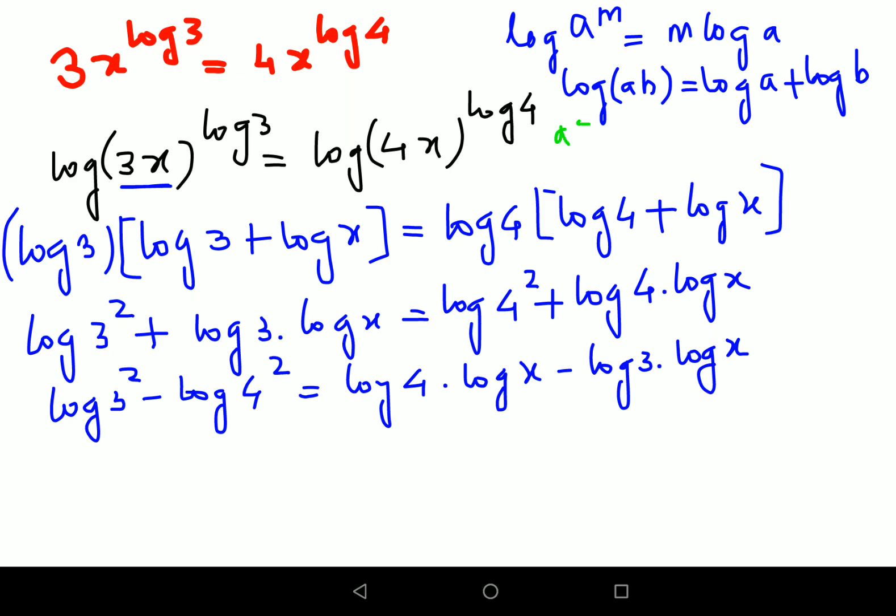Now if you look closely, this looks like expansion of a square minus b square. That expansion is nothing but a minus b into a plus b. So this will look like log 3 minus log 4 into log 3 plus log 4, and here we will take log x common.